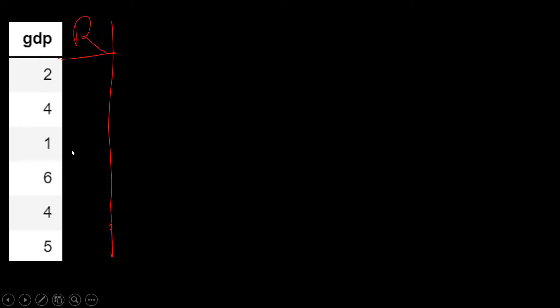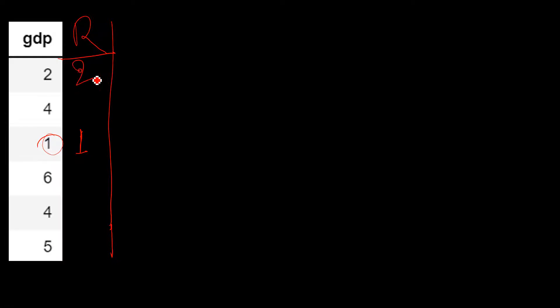I'm going to take an example. I will find the smallest value and give it rank number one — though you can also take the maximum value and give that rank one if you prefer. So here we have one, I give it rank one. The next value is two, so I give it rank two. The next value gets rank three, and the next gets rank four.